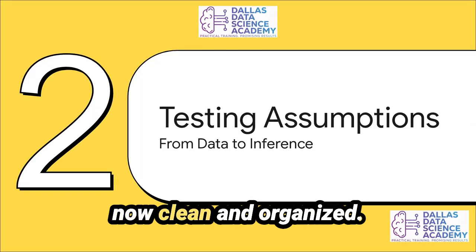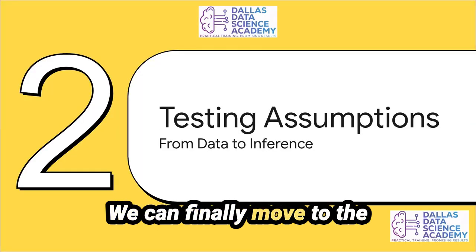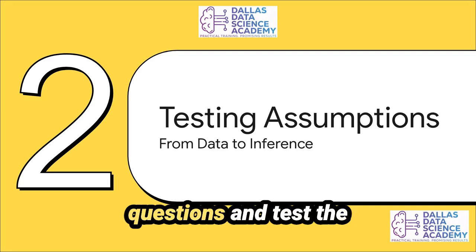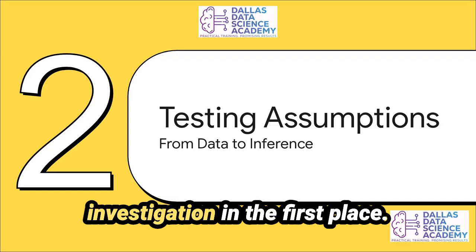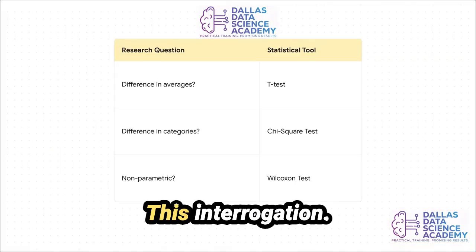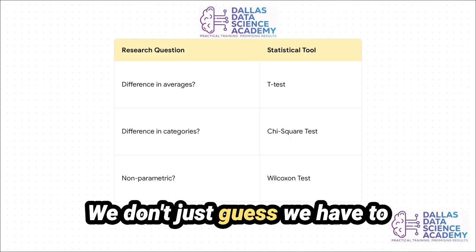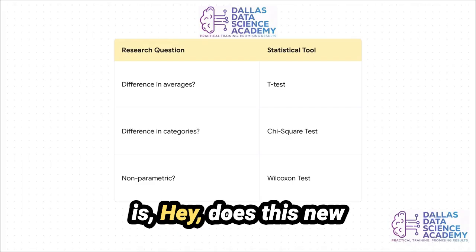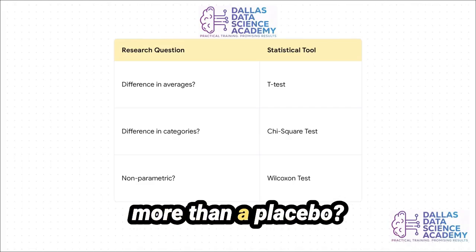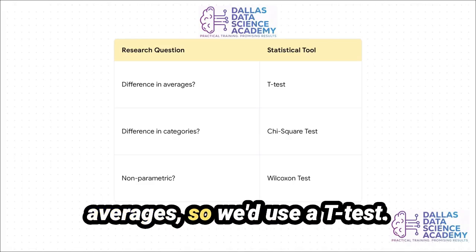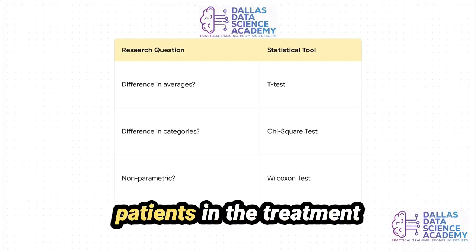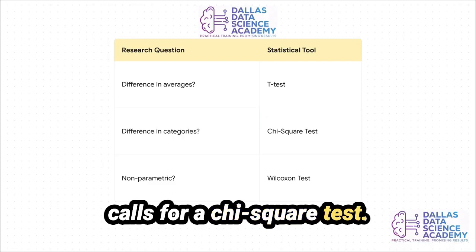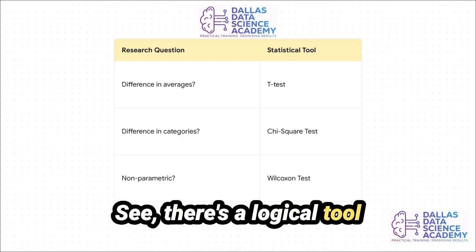Once our evidence is clean and organized, we move to interrogation — asking the data pointed questions and testing the hypotheses that kicked off our investigation. This is a structured process; we use the right tool for the job. If the question is whether a new drug lowers blood pressure more than a placebo, we're comparing averages, so we'd use a t-test. But if we're asking whether more patients in the treatment group recovered than in the control group, we're comparing categories, which calls for a chi-square test. There's a logical tool for every single question.